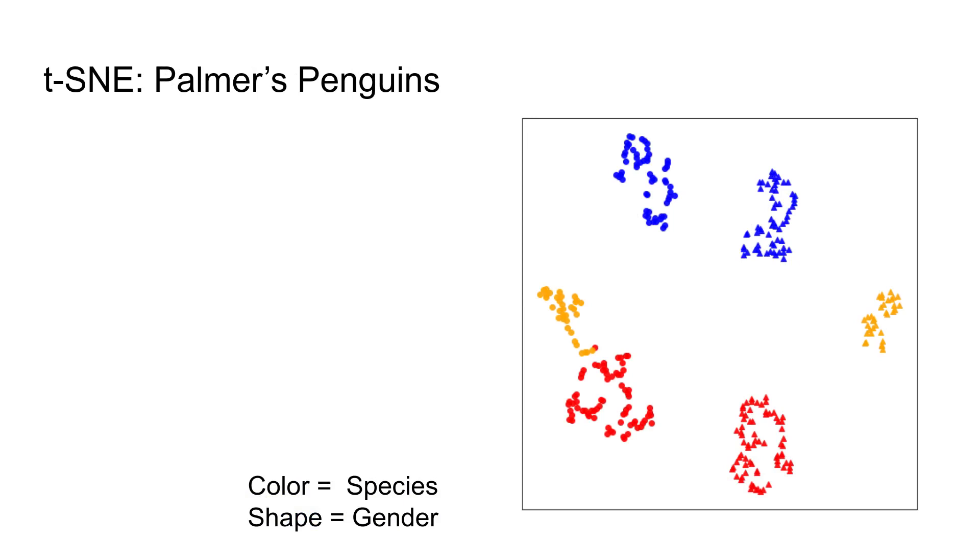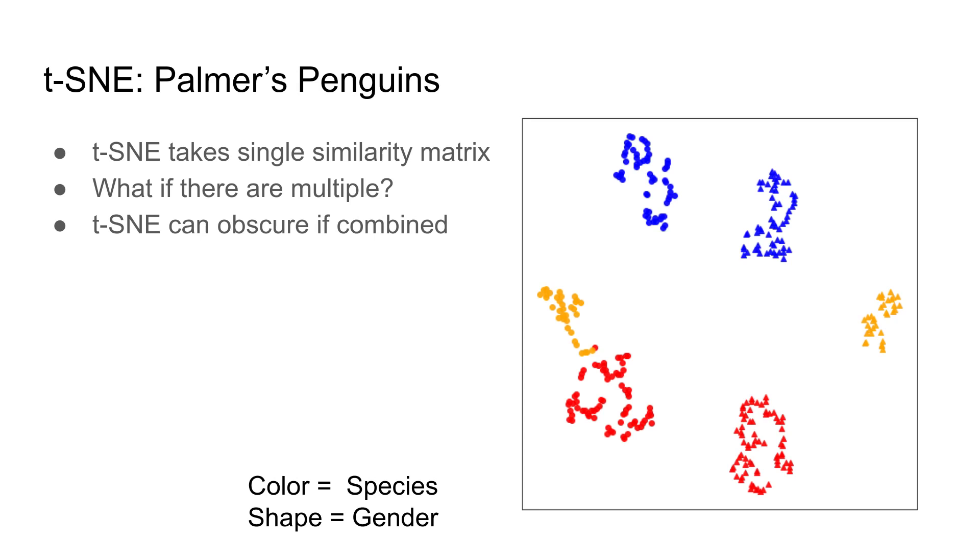The t-SNE dimension reduction technique takes a single similarity matrix and reduces it to usually two dimensions, attempting to preserve clusters. If there are multiple relationships in a dataset, we must either combine them into one t-SNE plot, which can obscure information, or show them as several unrelated small multiples.